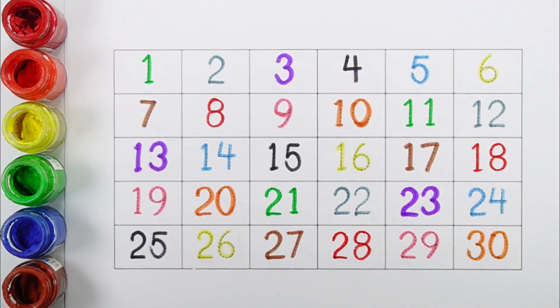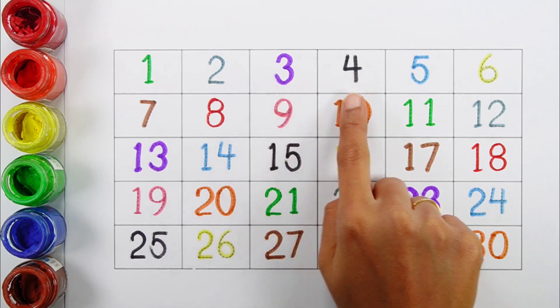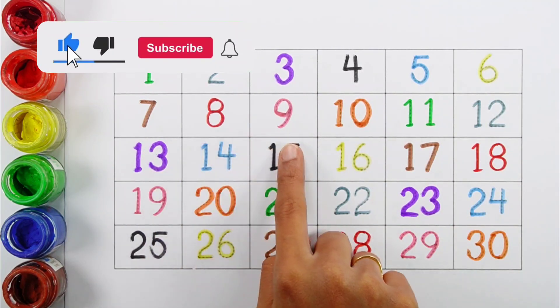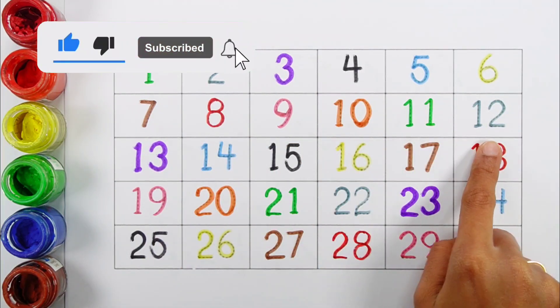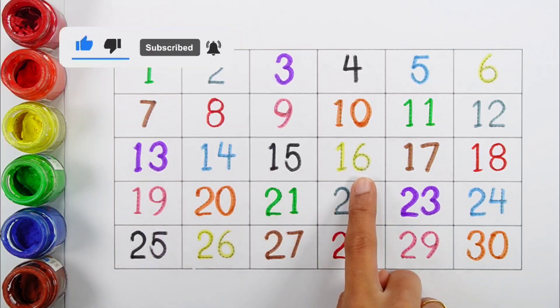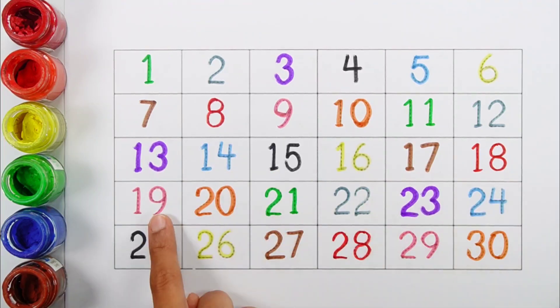30. 1, 2, 3, 4, 5, 6, 7, 8, 9, 10, 11, 12, 13, 14, 15, 16, 17, 18, 19.